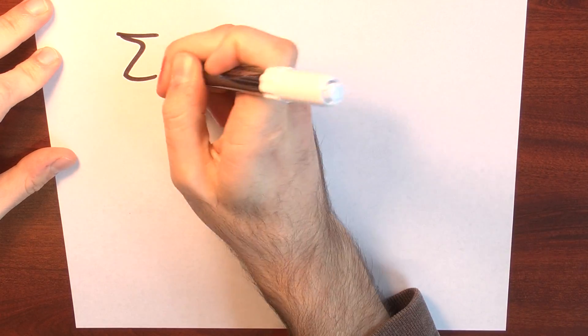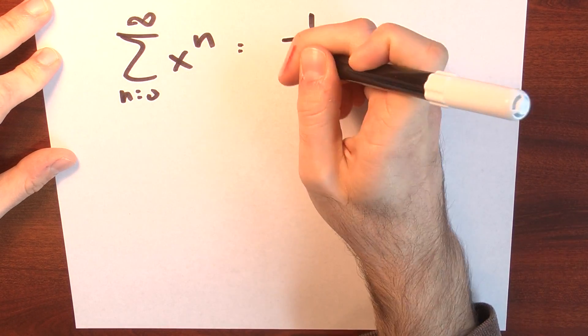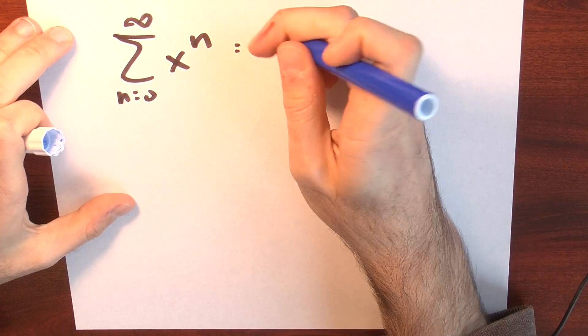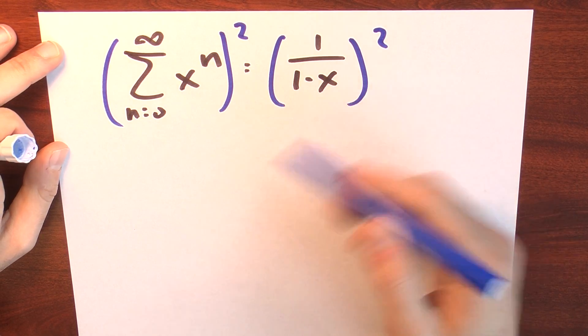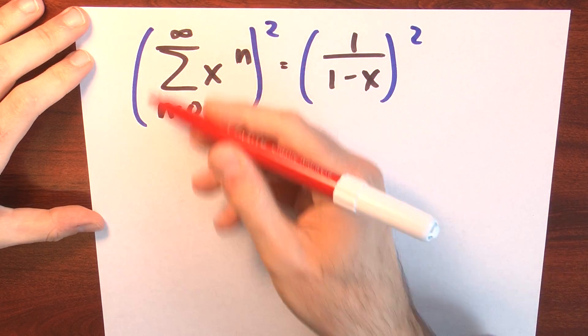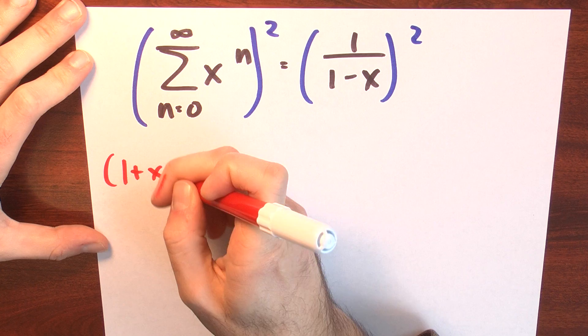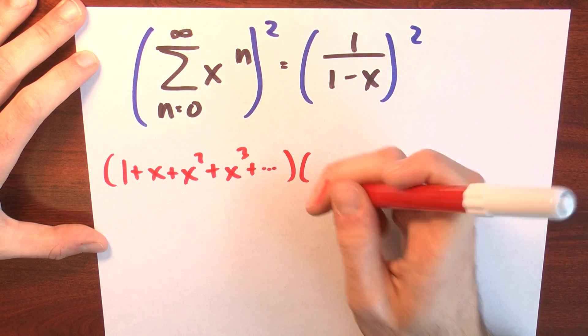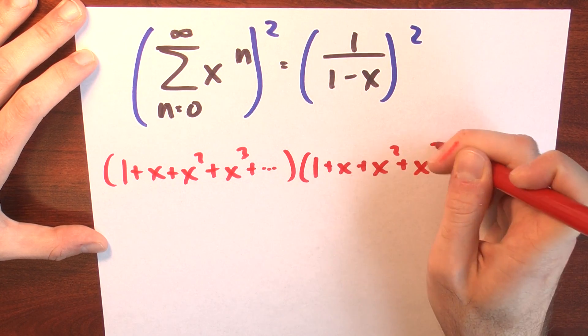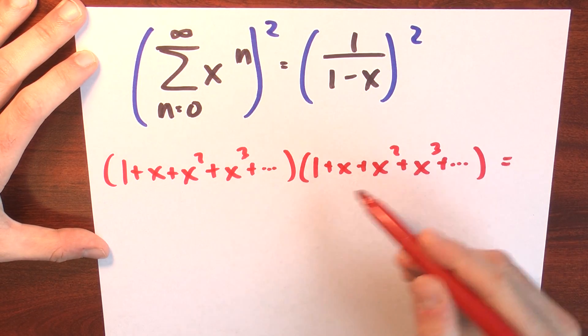If I don't like differentiating, I could also approach this problem by trying to multiply together two copies of the original power series. The sum of x to the n, n goes from 0 to infinity, is 1 over 1 minus x. That means if I square both sides, I should get a power series for 1 over 1 minus x quantity squared. Let's at least figure out what the first few terms are. Writing down the first few terms: 1 plus x plus x squared plus x cubed plus dot dot dot, and I'm squaring that by multiplying it by itself: 1 plus x plus x squared plus x cubed plus dot dot dot.